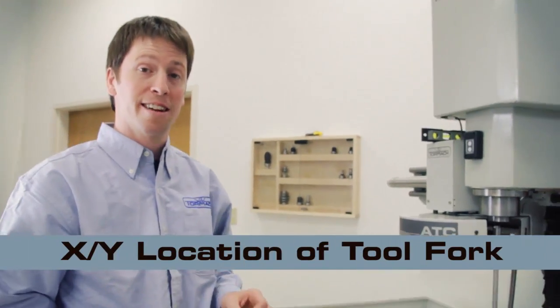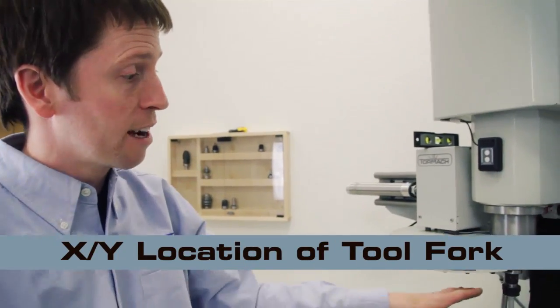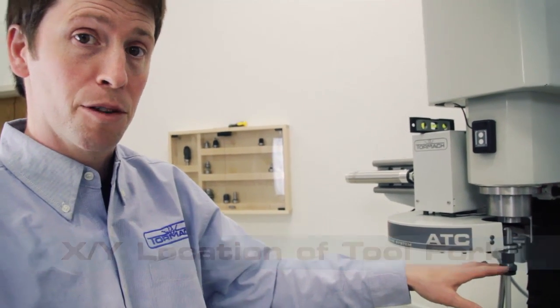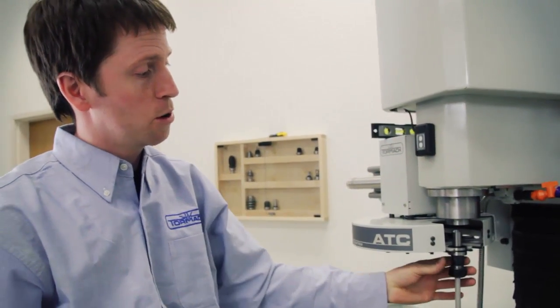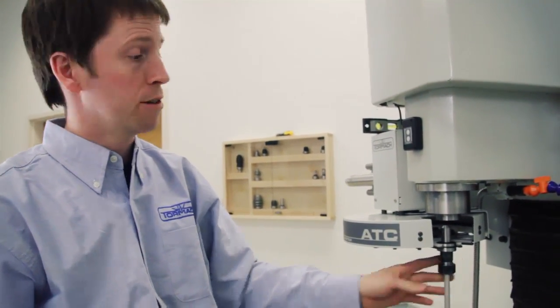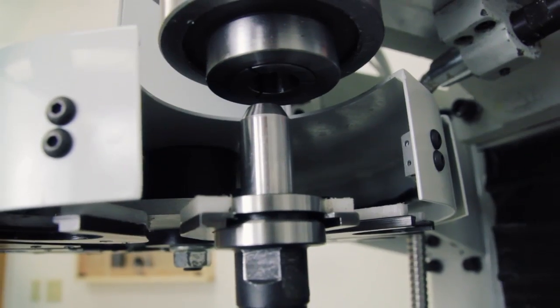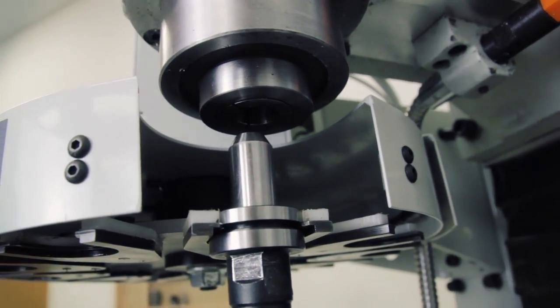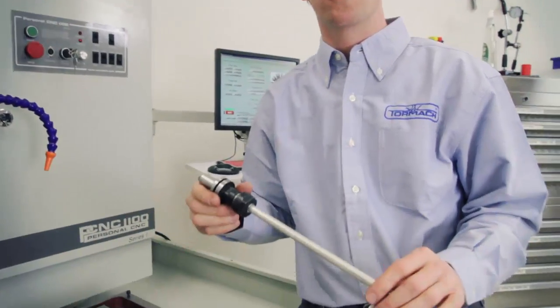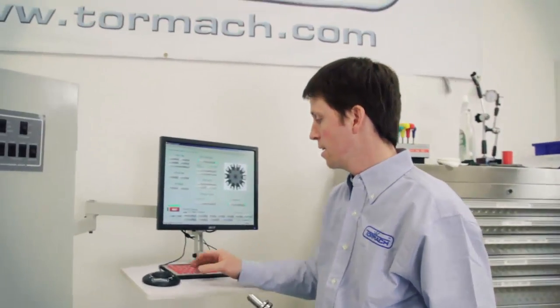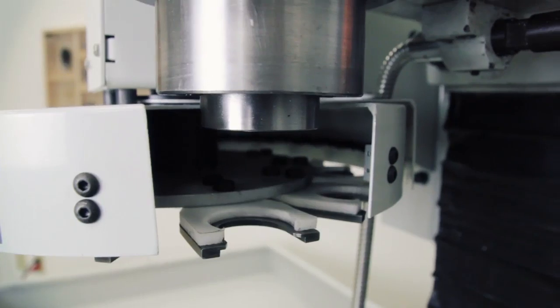The next step is going to be adjusting the XY location of the tool fork during a tool change. So that's where the spindle nose comes down over the top of this tool fork. All right, I'm going to go ahead and take our alignment tool out of the carousel. And then I'm going to jog the Z axis down until the spindle nose is just above the tool fork.